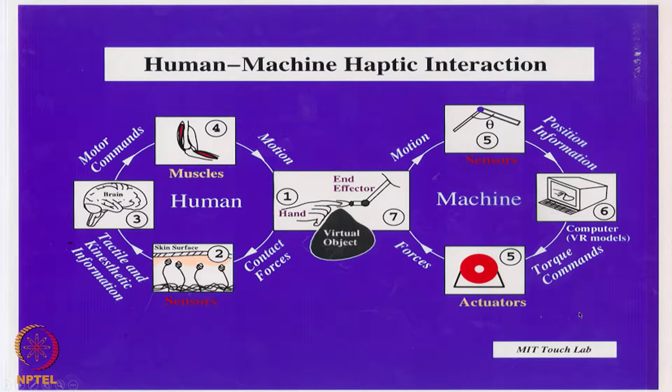Again, to remind you, we are talking about the human haptics. The first half of the course, we focused on the human haptics. Now we are trying to mimic the human haptics in the machine. You can consider human haptics as the science part of haptics, whereas machine haptics can be considered as the technology part of haptics.